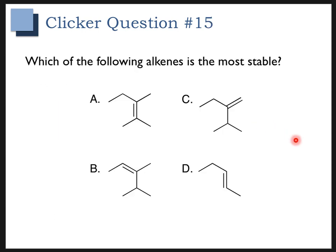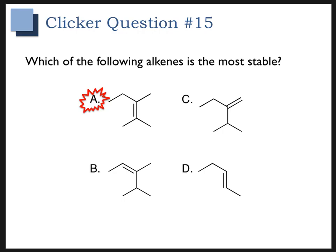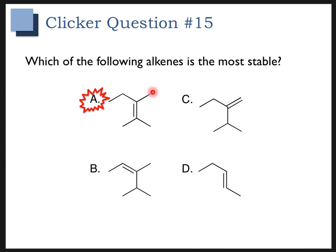Here's another review question: which alkene is going to be the most stable? Hopefully you got A. The key thing to remember is that the more groups attached to an alkene, the more stable it's going to be. A is the most stable with four groups attached. B with three groups is next. D with two groups in a trans configuration is more stable than C, which also has two groups but is not trans.